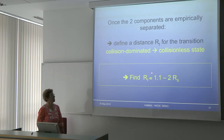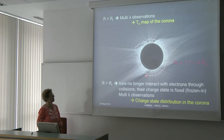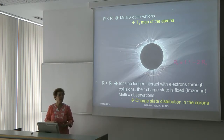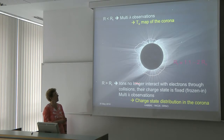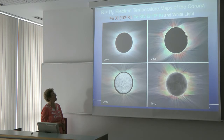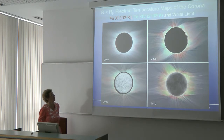Depending on the structure, the freeze-in distance ranges from about 1.1 to 2 solar radii. Beyond that region, anything escaping can no longer change its ionization state. Temperature maps from 2008, 2009, and 2010 show that while the corona's shape changes, the temperature distribution is consistent: anything escaping from the sun is at the cooler temperature of about a million degrees, and anything connected to the sun in closed loops is at about 2 million degrees.